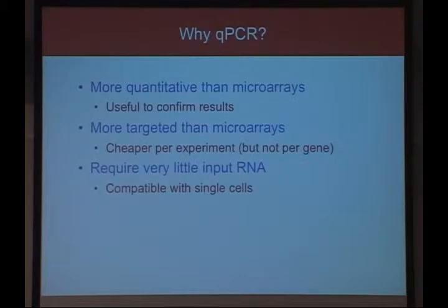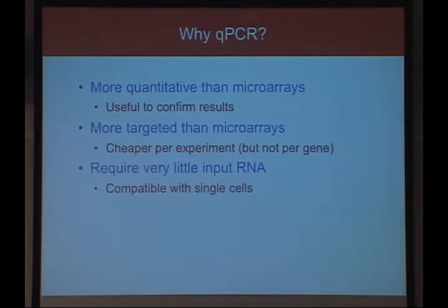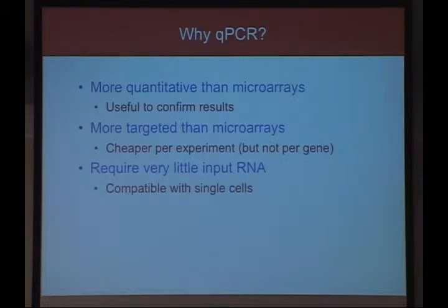Why do qPCR rather than a microarray? A microarray can read 40,000 genes — the whole genome — versus just 10, 20, or 50 genes with qPCR. But qPCR is more quantitative; microarrays measure hybridization within a limited dynamic range. Most people use qPCR to confirm leads from microarray experiments. It's cheaper per experiment if targeting a dozen or so genes, though the microarray is more cost-effective on a per-gene basis.